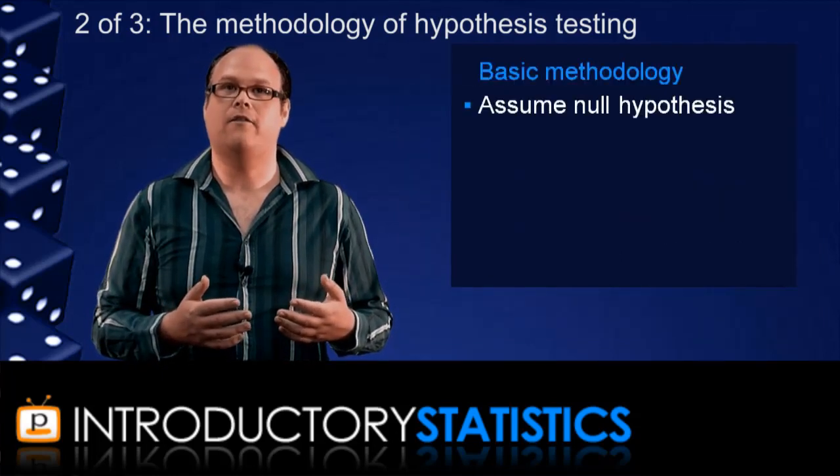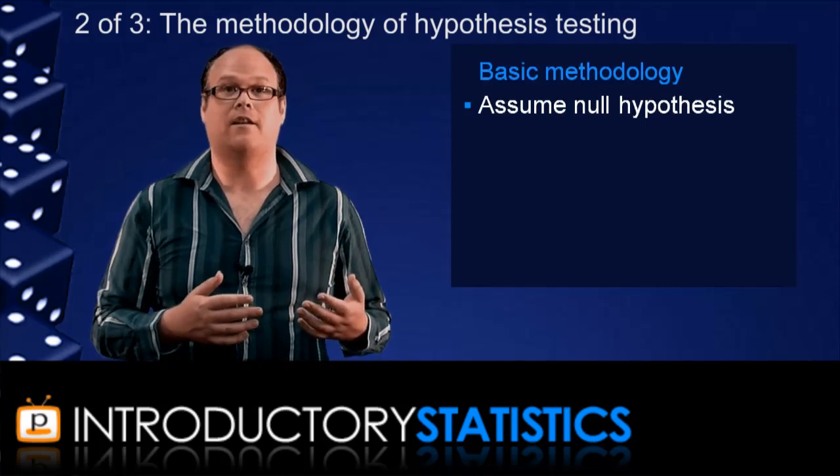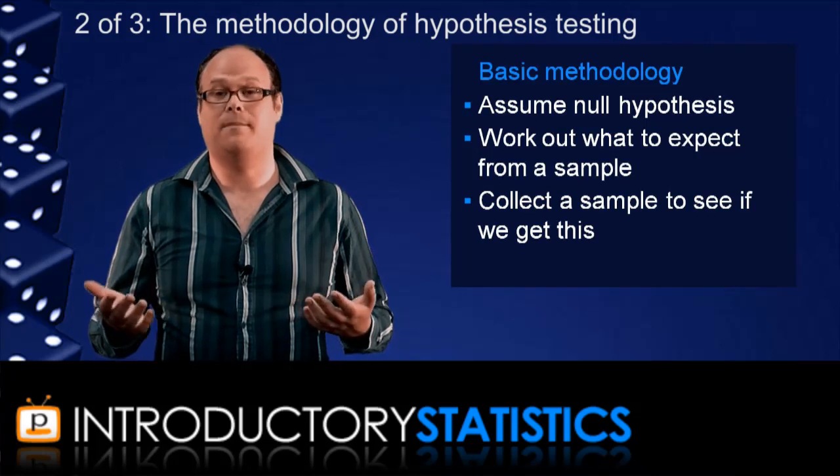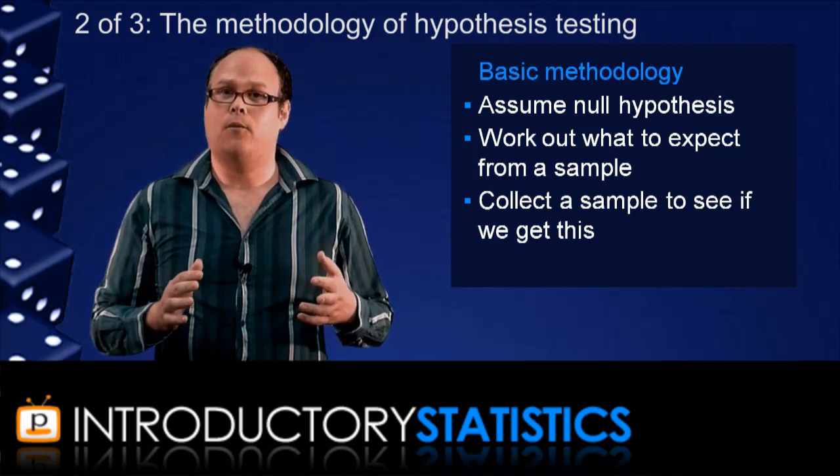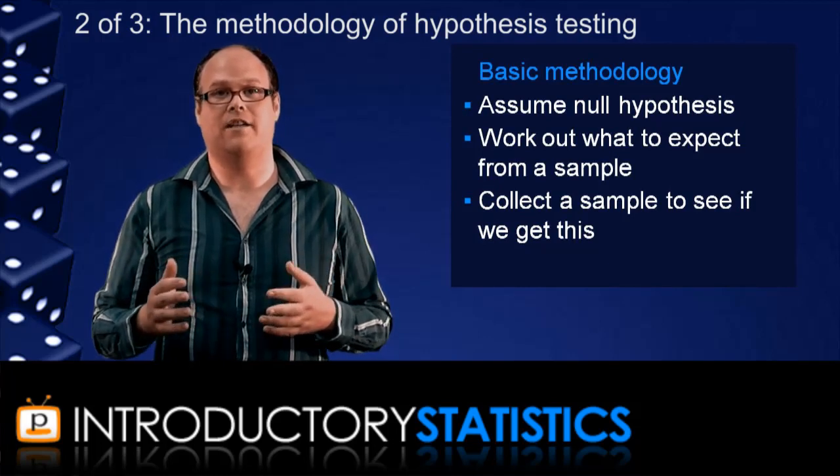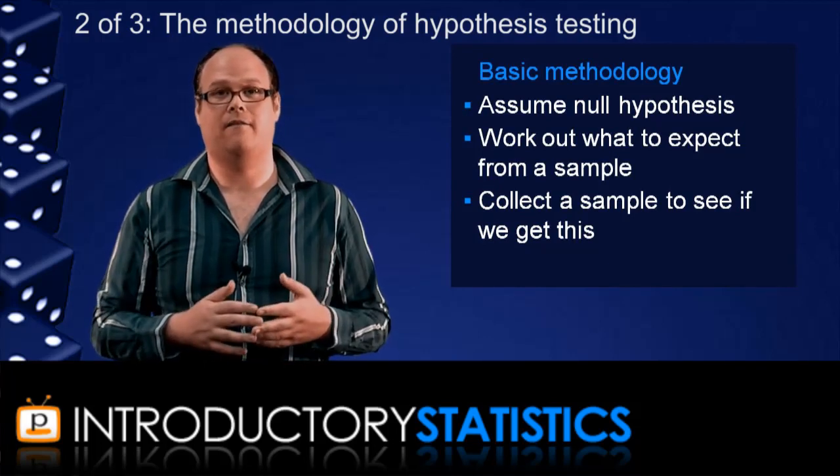We assume the null hypothesis value for the parameter is true. We let this tell us what to expect from a sample. And then we collect a sample and see if we get what we expect. To be more precise about the method though, we have to relate the sampling distribution to the standard normal distribution z. Here's a step-by-step guide for a hypothesis test. First, we state the null and alternative hypotheses.